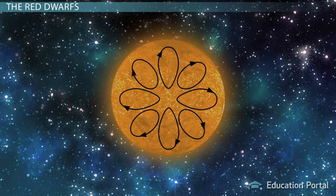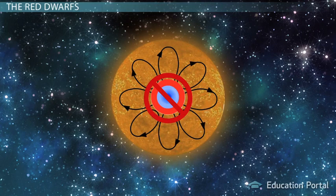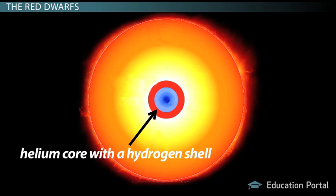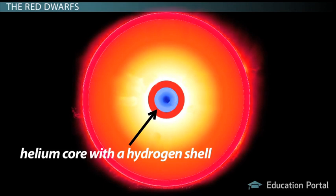But this mixing, this convection, also disables a red dwarf's ability to have a helium core that is surrounded by a hydrogen shell. A helium core arises in more massive stars when the hydrogen in their core is converted into helium. This helium core then helps to ignite the hydrogen shell surrounding the helium core for energy. This in turn is what causes a star to expand into a giant.